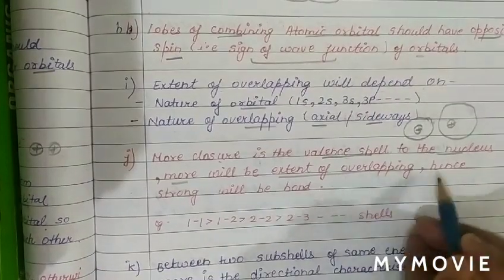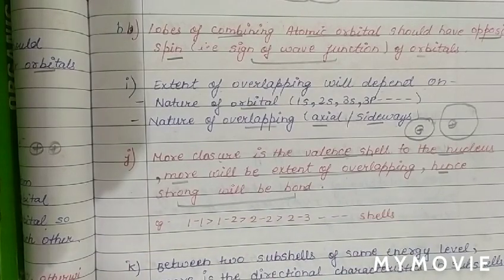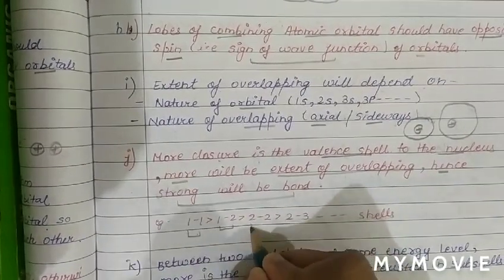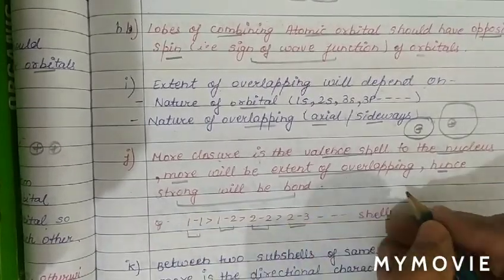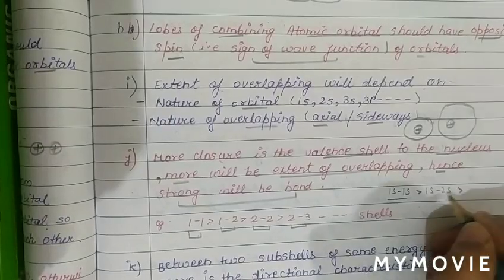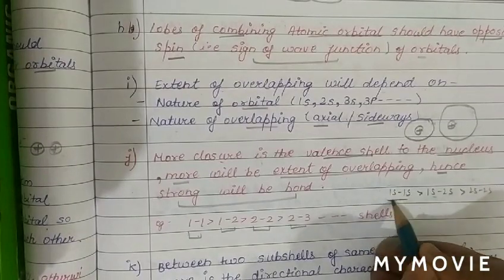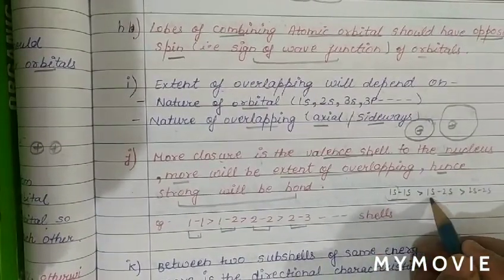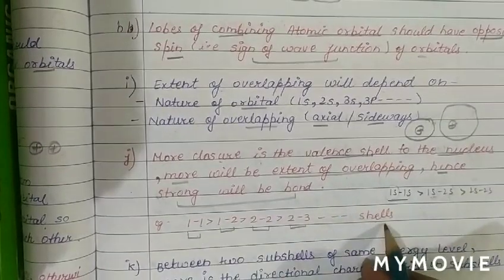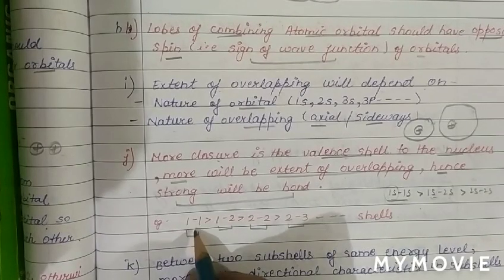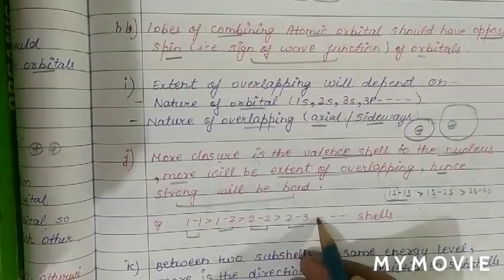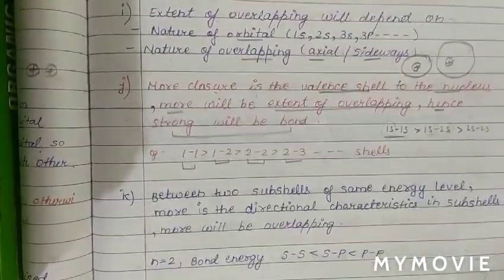If a bond forms between 1s–1s it is stronger than 1s–2s, which is stronger than 2s–2s. This is because 1s is a smaller orbital closer to the nucleus, giving greater extent of overlap and hence stronger bonds. The bond strength depends on how close the valence shell is to the nucleus.